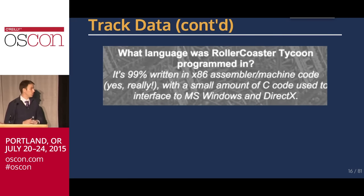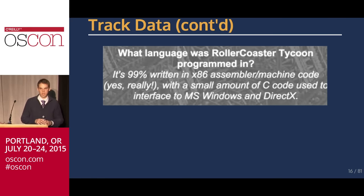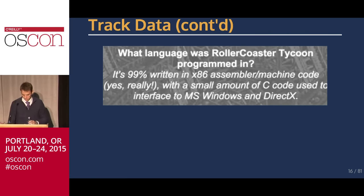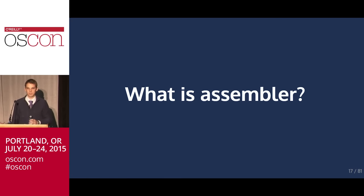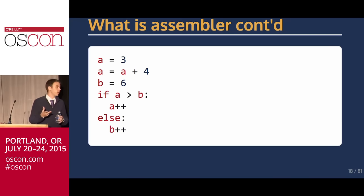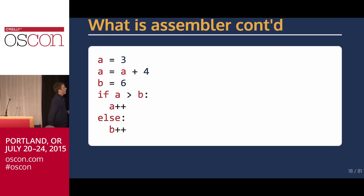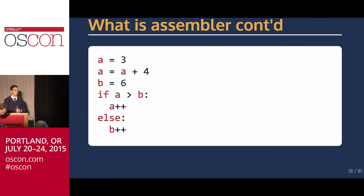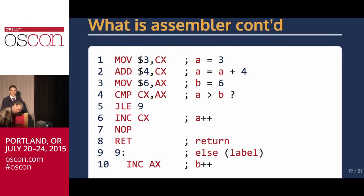The tricky part is RollerCoaster Tycoon is programmed entirely in x86 with a small amount of C. It was written by one guy who wrote x86 all by himself back in '99. So it's not your typical 'let's go read the source code.' If you're not familiar with x86 — when you write code in a high-level language or even C, your computer can't actually execute it. It has to get translated down into CPU instructions. Here's some basic code where I'm assigning variables and adding to them — this gets compiled into x86 instructions.